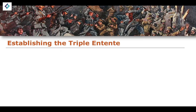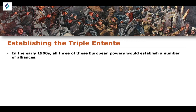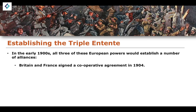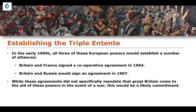These are the three major powers within the Triple Entente. The establishment of the Triple Entente takes place in the early 1900s. Britain and France would sign a cooperative agreement in 1904, and Britain and Russia would sign an agreement in 1907. While these agreements did not specifically mandate that Great Britain would come to the aid of France and Russia in the event of a conflict, it was generally seen as a likely commitment. So while it was not as explicit as the obligations within the Central Powers, it was still something that was likely to occur if conflict arose.